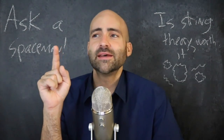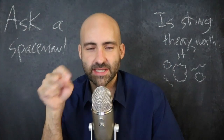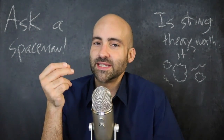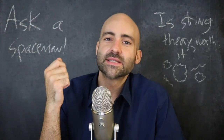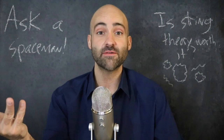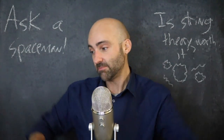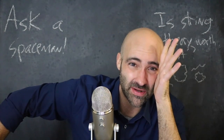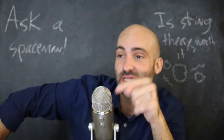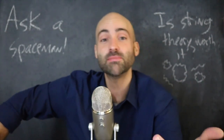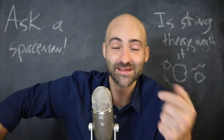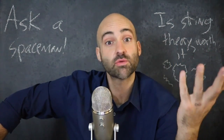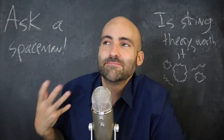Early 1960s string theory just didn't work — it was making slightly wrong predictions. And as people explored inside this theory, they found that it also predicted the existence of tachyons. Tachyons are particles that travel faster than the speed of light, and you can't travel faster than the speed of light. We don't observe tachyons; they violate special relativity, which has been tested extensively. So if your theory predicts tachyons exist, it's kind of hard to buy into that theory.